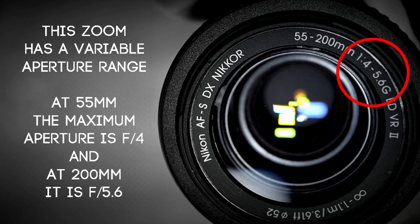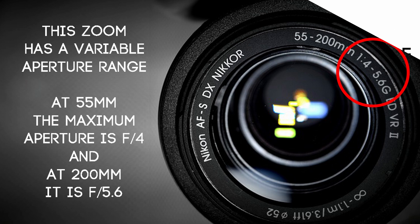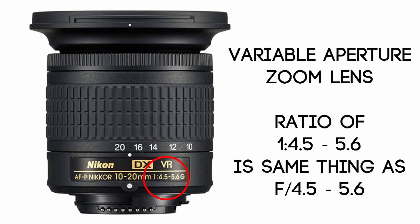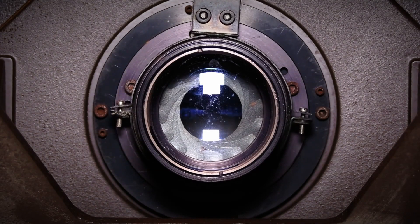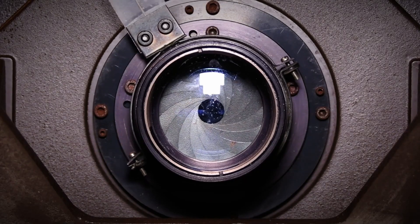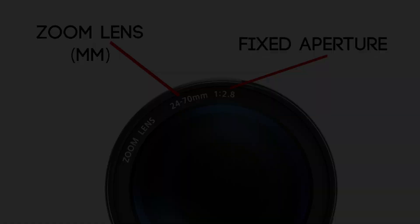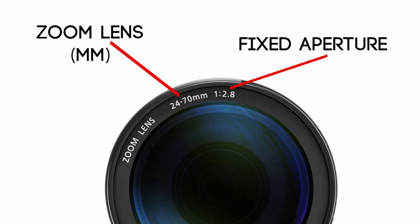If the lens is a zoom, it usually has a range such as F4 to F5.6. This is a variable aperture and tells you the maximum apertures at the shortest and longest focal lengths. These numbers may appear with or without the F, or as a ratio. With variable aperture, the more you zoom, the narrower the aperture becomes. There are some zoom lenses that have fixed apertures — these will be more expensive. Understanding maximum aperture is important because wider apertures allow more creative control over depth of field and make photography in lower light conditions easier.